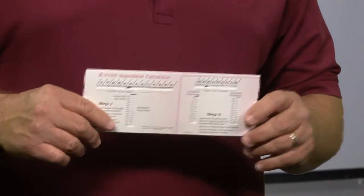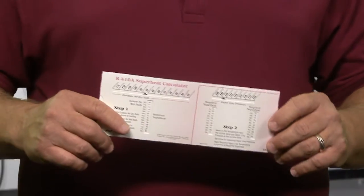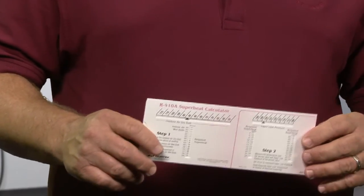This is done using the slide calculator, as the required superheat will change as the load conditions change. Keep in mind, to use the slide calculator, you will need to be able to measure the outdoor dry bulb temperature and the indoor wet bulb.